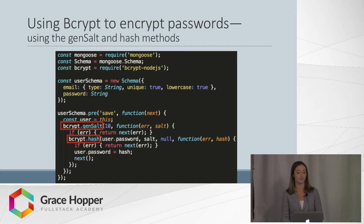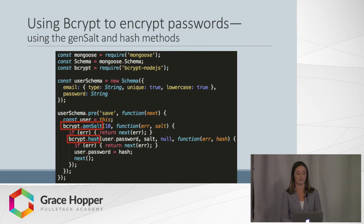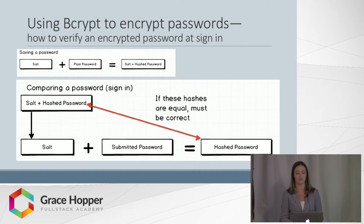This coding example shows how the bcrypt library's genSalt method is employed before a user is saved to the database. The method produces a salt that is fed into the hash method from the bcrypt library within the callback, and the resulting hash is then saved in the user model.